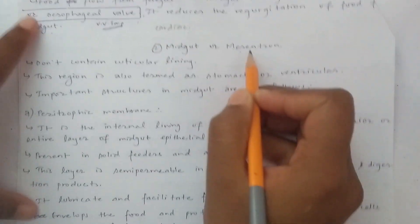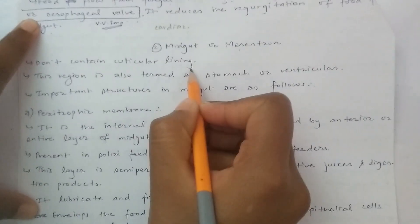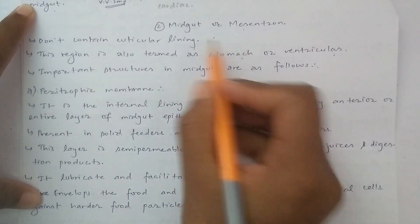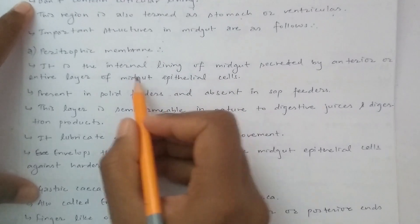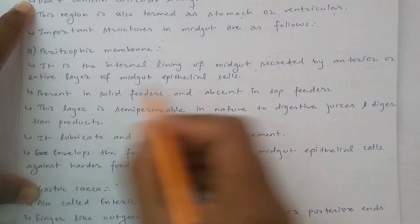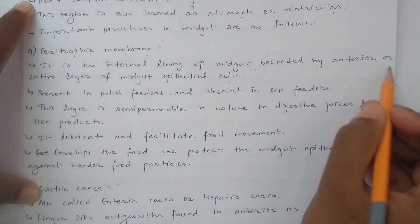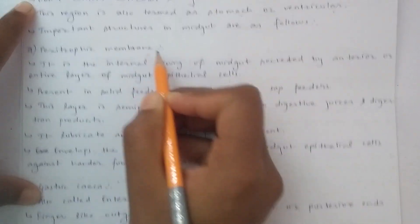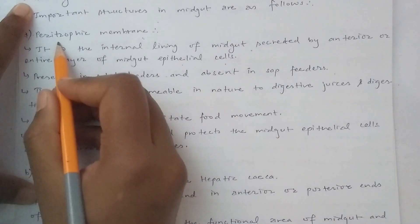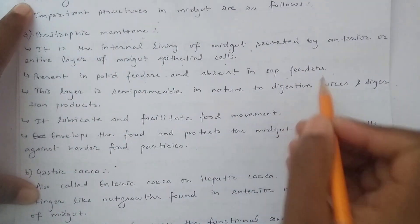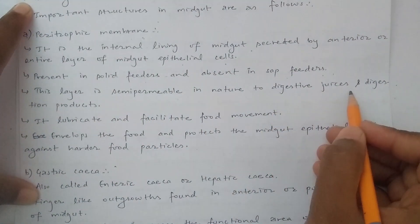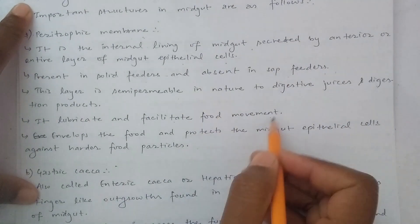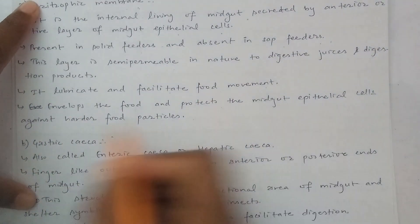The midgut is also called mesenterone and has no cuticular lining, so absorption occurs here. This region is also called the stomach or ventriculus. An important structure is the peritrophic membrane, which is the internal lining of the midgut secreted by epithelial cells. It lubricates and facilitates food movement.